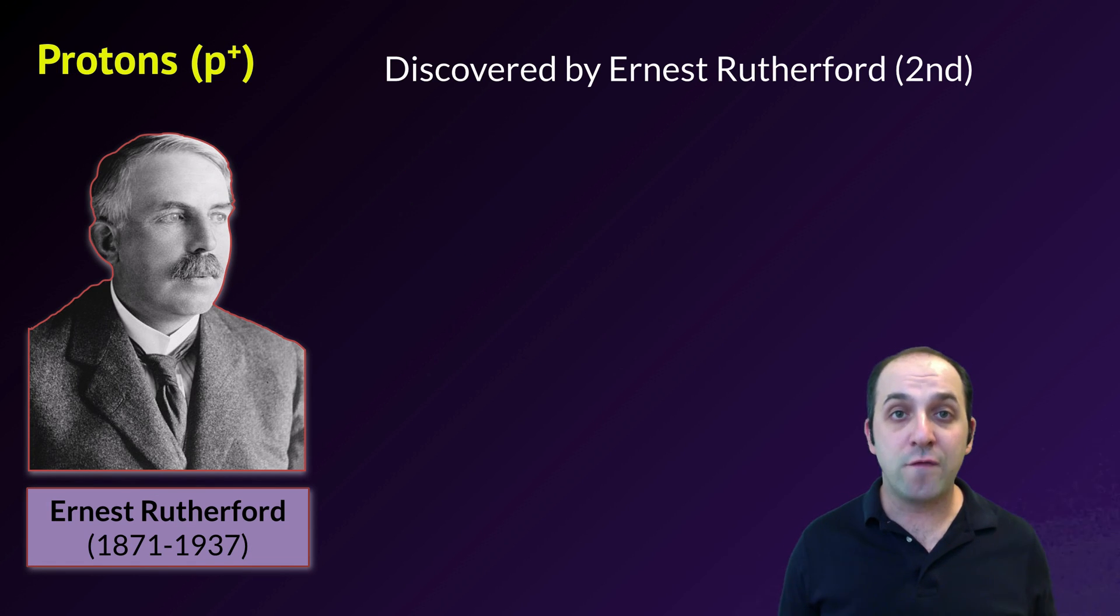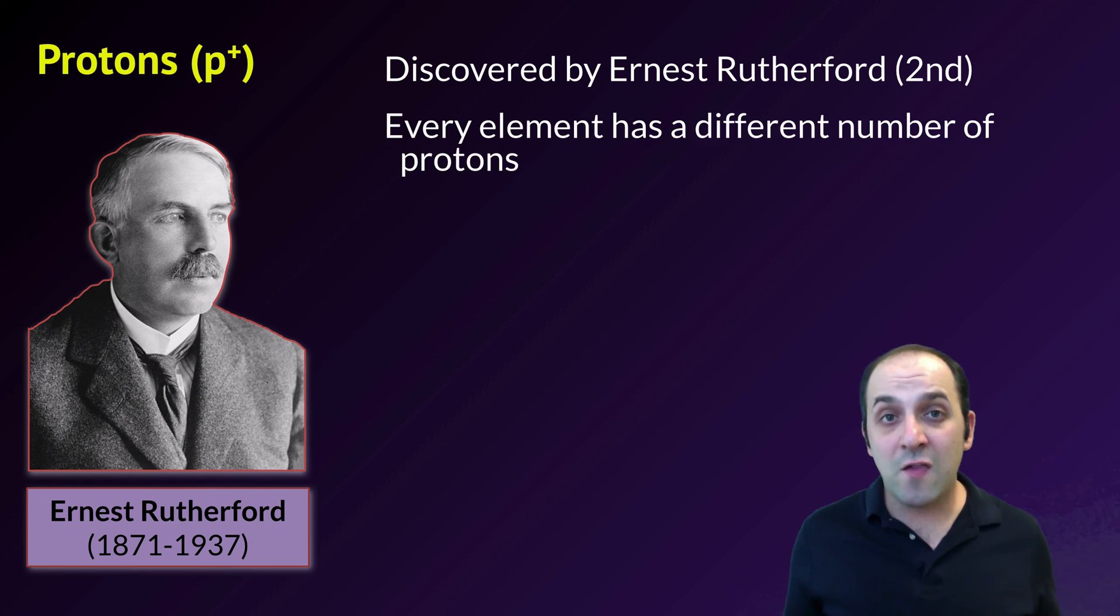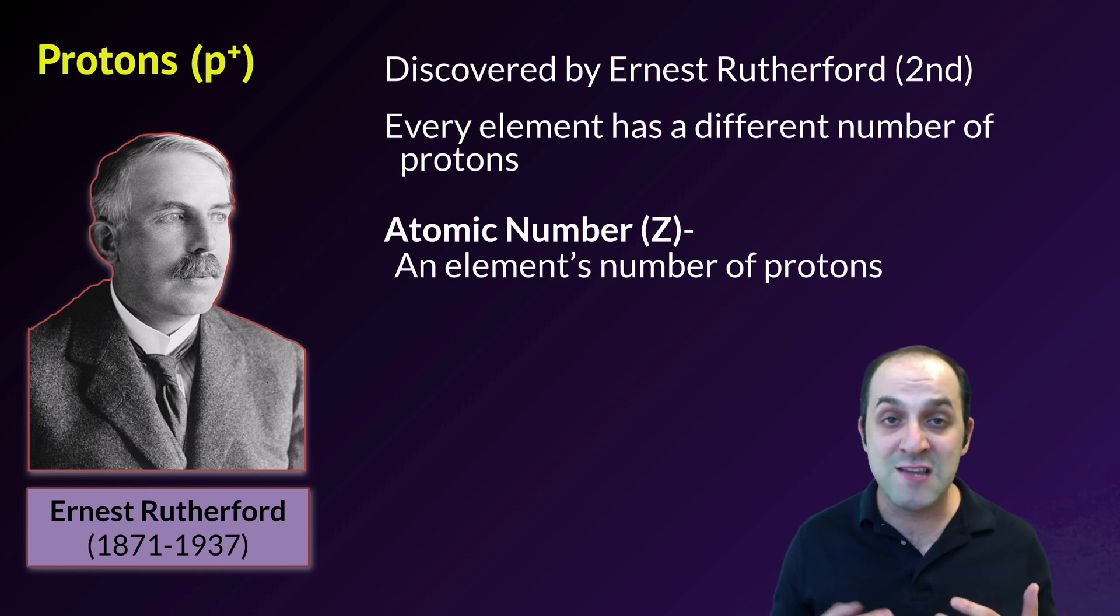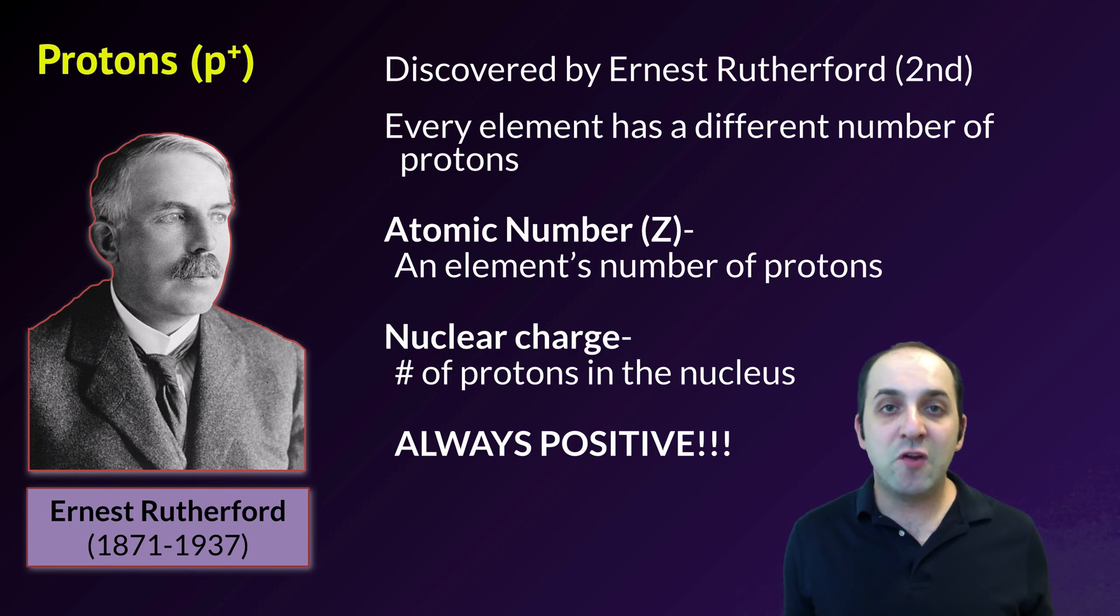Protons were discovered by Ernest Rutherford second, in the very early part of the 20th century. Unlike electrons which could be exchanged between individual atoms in making bonds, atoms really cannot exchange their protons. The number of protons that an atom has is very characteristic of that particular atom. That's what we call that atom's atomic number. Without getting too much into the periodic table currently, that's how all of the elements are arranged on the modern periodic table, in order of increasing atomic number, because that number of protons really is characteristic of individual elements. If you change the number of protons, you're no longer talking about the same element.